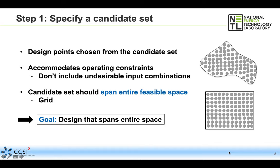The way we account for an irregular region is to specify a candidate set. The candidate set specification is always going to be step one when generating a design using the Sequential Design of Experiments module in FOCUS, whether our space is regular or irregular. The candidate set is a set of potential input combinations from which the design points are going to be selected.